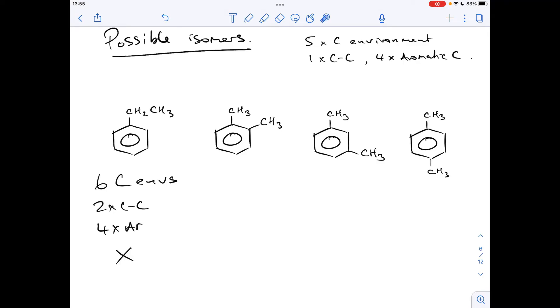It's not that one. So moving on to the next one, we've got a line of symmetry running down here. I'll just draw that in. So they're equivalent to each other. That's one carbon-carbon environment. They're equivalent to each other. So that's an aromatic carbon environment. They're equivalent to each other. And they're equivalent to each other. So this one has one, two, three, four carbon environment. One C to C. Three aromatic. So it's not that one.